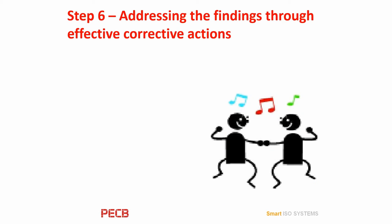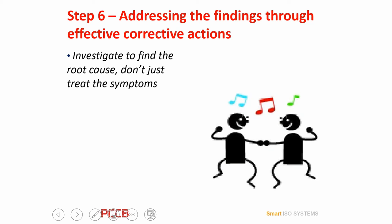We're on to Step 6 now. Investigate and find a root cause — don't just treat the symptoms. All too often audit findings are given the minimum attention to clear them down. One way to help get to the bottom of the problem and stop it recurring is to use the five-why technique.